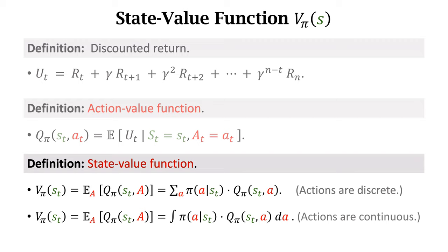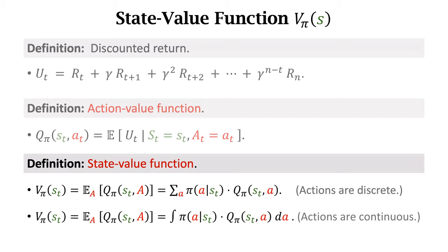Sometimes, the action a is a continuous variable. For example, in self-driving cars, the angle of the steering wheel is a continuous action. Its values can be angles in a certain range. For continuous variables, the expectation is the integral.